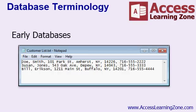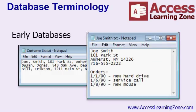For example, you could have a list of customers with some basic details, but if you want to look up information on their purchases, you would have to look in a different file. The earliest databases had no way to relate this information together. This creates many problems, including having multiple copies of the same information in different places, such as the customer's name and address. Updating all that information can be a nightmare. Fortunately, Microsoft Access does recognize relationships — that's one of its strong points, but much more on that later.